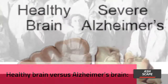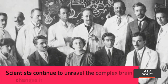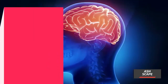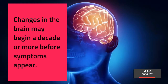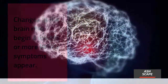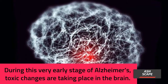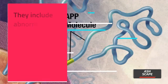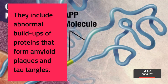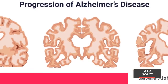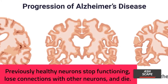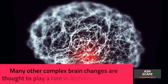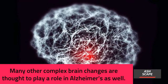Scientists continue to unravel the complex brain changes involved in Alzheimer's disease. Changes in the brain may begin a decade or more before symptoms appear. During this very early stage, toxic changes take place in the brain, including abnormal buildups of proteins that form amyloid plaques and tau tangles. Previously healthy neurons stop functioning, lose connections with other neurons, and die.